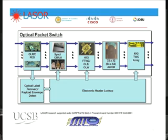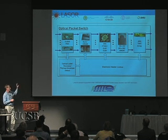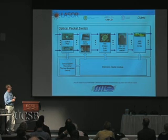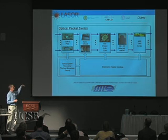There's a DARPA-funded project at UCSB called LASOR — an optical packet switch or optical packet router. There is still a bunch of functionality done electronically that burns a lot of power. But there is now a demonstration and proof of concept showing that you can get a lot of this routing functionality done optically, one step at a time.